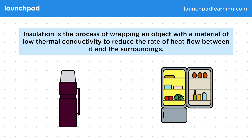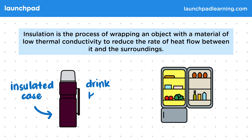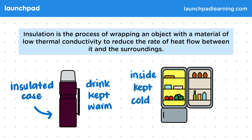A flask is a good example of insulation. The flask has an insulated case and it keeps the drink inside warm for a long period of time. It does this by reducing the heat flow between the warm drink and the cooler surroundings. In a similar way, a fridge is insulated. The inside is kept cold as the inside is insulated, and it works by reducing the heat flow between the warmer outside and the cooler inside.